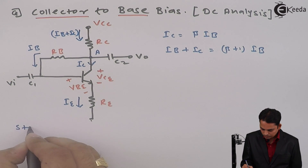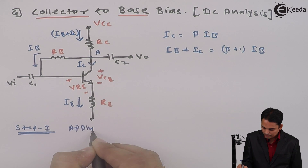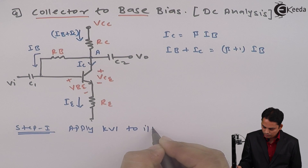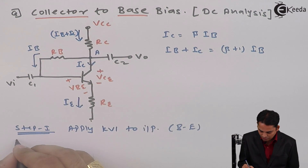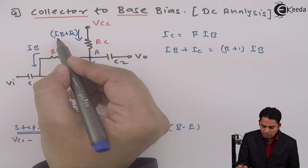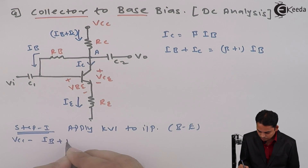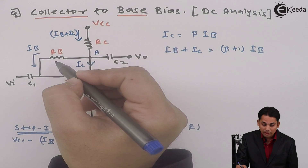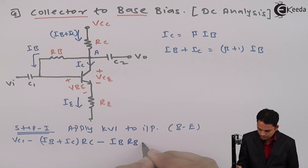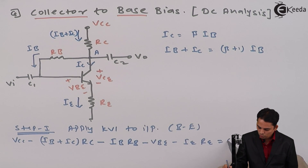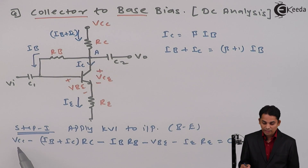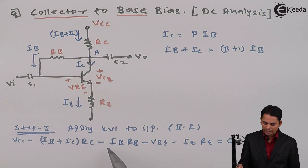Step 1 is to apply KVL to the input, that is base to emitter. Starting with VCC, the equation becomes: VCC minus (IB plus IC) into RC minus IB into RB minus VBE minus IE into RE is equal to zero.